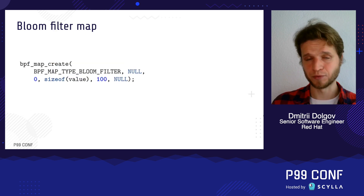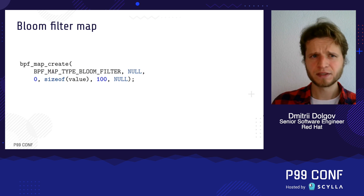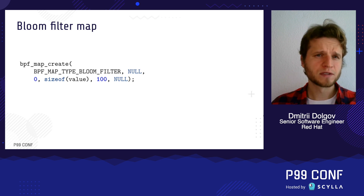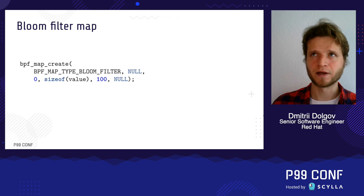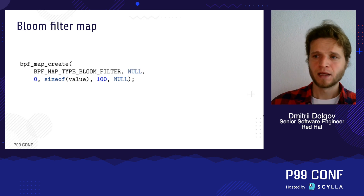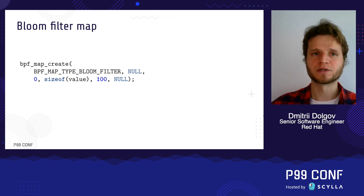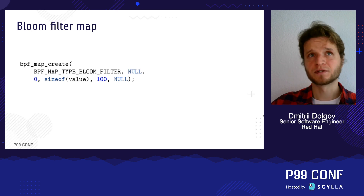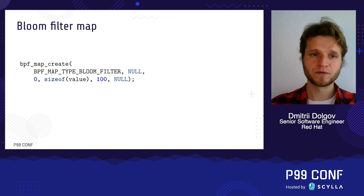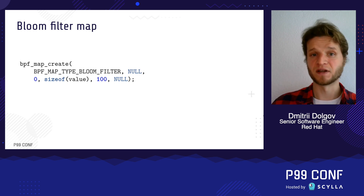Another very interesting thing that can help with the algorithmic part is the Bloom filter map, which is absolutely mind-blowing and was implemented quite recently. A Bloom filter is a probabilistic data structure that lets you very quickly and efficiently figure out if an element is not present in the map. It's probabilistic in the sense that you can determine with 100% precision that an element is not present. If it is present, you may get false positives and have to verify, but for the 'not present' case it's extremely efficient. If you have this situation in your program, you may want to use Bloom filter instead of anything else.